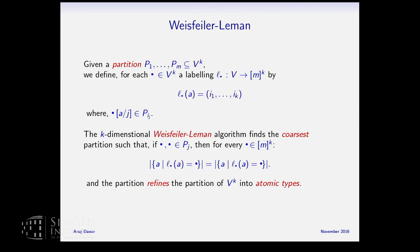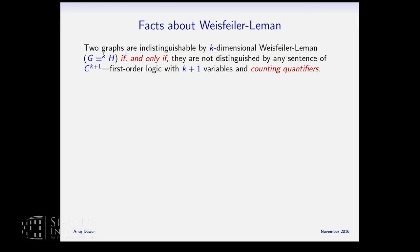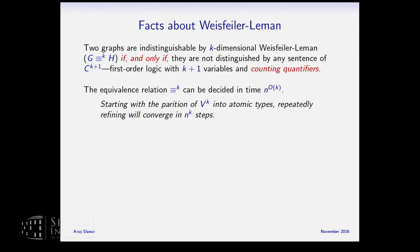The algorithm stabilizes in at most n^k iterations, and computing each iteration takes O(n^{k+1}) time, so for fixed k this is a polynomial time algorithm. Two graphs are indistinguishable by k-dimensional Weisfeiler-Lehman if and only if they are not distinguished by any sentence of C_{k+1} — first-order logic with k+1 variables and counting quantifiers. This characterizes equivalence in this logic.